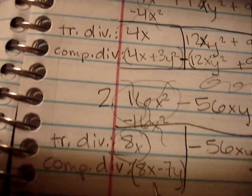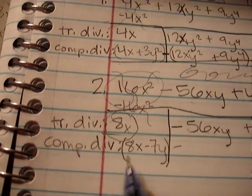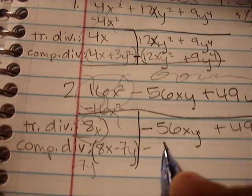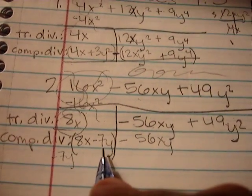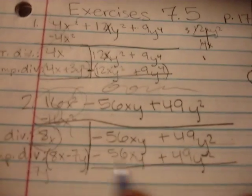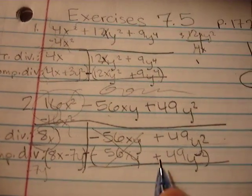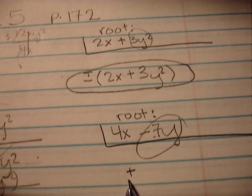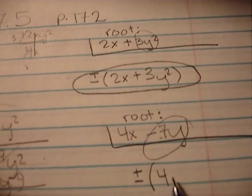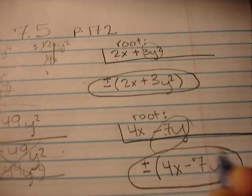Okay, negative 7y times 8x is negative 56xy. Negative 7y times negative 7y is positive 49y squared. And you can tell that these are going to cancel out. When you subtract them, there will be a positive 56 that will cancel with the negative. That will be negative 49y squared that will cancel with the other one. So, our answer, we're going to write it as plus or minus 4x minus 7y. That's our root for number two.